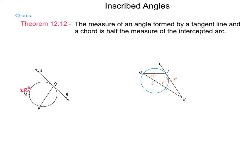We need to find the measure of angle PQR. Well, in order to do this, let's first find PQS. We know from theorem 12-12 that this is going to be half of the intercepted arc. That arc is 212 degrees,